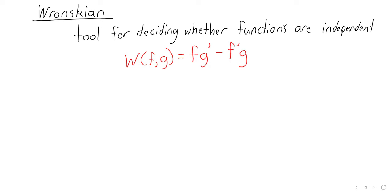What the Wronskian is, if you've seen this notation before, is a determinant of a matrix of functions. If that doesn't mean anything to you, don't worry about it. You can think of the Wronskian as just being that combination of functions and derivatives.